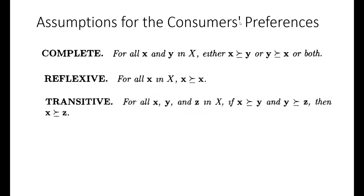The third assumption is transitivity, which is straightforward. If there are three consumption bundles — bundle x, bundle y, and bundle z — and all of them belong to the consumption set, then by transitivity: if x is at least as preferable as y, and y is at least as preferable as z, then by default x is at least as preferable as z.